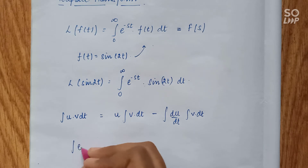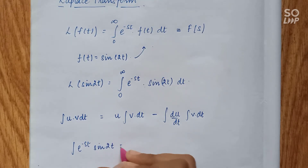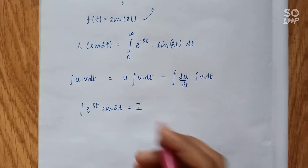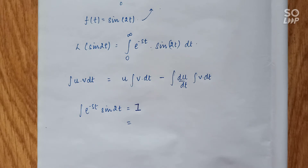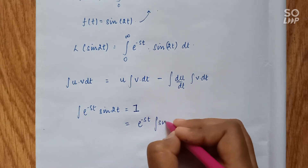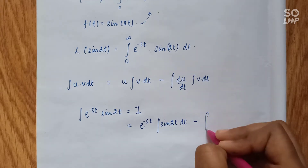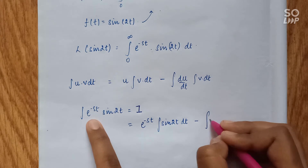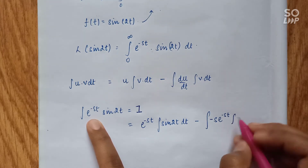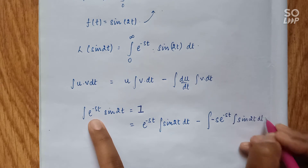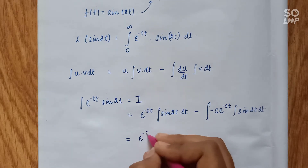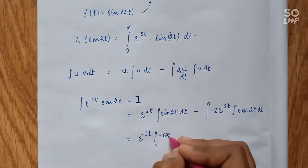Let's assume the integration of e^(-st) sin(2t) is equal to I, excluding the limits — we'll put the limits at the end. Applying the by-parts formula, u is e^(-st). The integration of sin(2t) is -cos(2t)/2, so we get e^(-st) times (-cos(2t)/2).